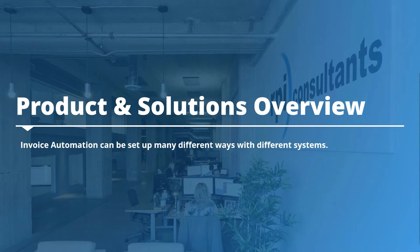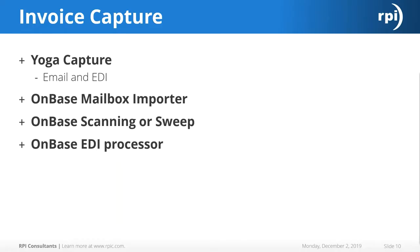To capture the document itself, we can use Yoga Capture, which allows for emails to a specific inbox or EDI. There's the OnBase Mailbox Importer, which monitors an email address for new emails and brings documents directly into OnBase — you can send them to a scan queue or workflow queue. There's also traditional OnBase scanning, an OnBase Sweep to pull images from a network location, and the OnBase EDI Processor. These are the main capture methods we typically see.